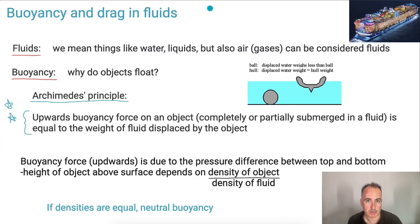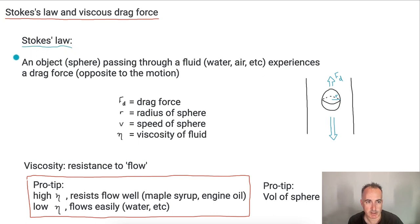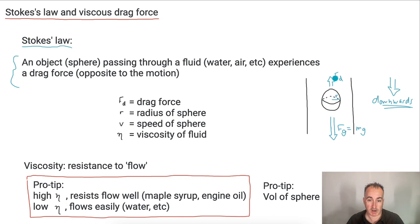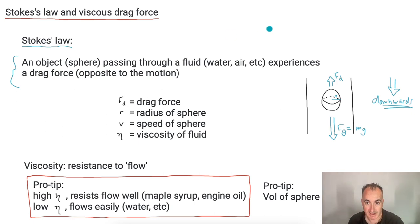Just like Archimedes' Principle, now we've got Stokes' Law. It says that an object — we'll assume it's a sphere — passes through some kind of fluid, whether that's water, maple syrup, or air, and it experiences a drag force opposing the motion. If this object is moving downwards, there's Fg equal to Mg going down, but the drag force acts upwards. This is the same thing that happens when skydiving — you jump out of an airplane, you feel a downward force, but there's air resistance as an upward drag force.